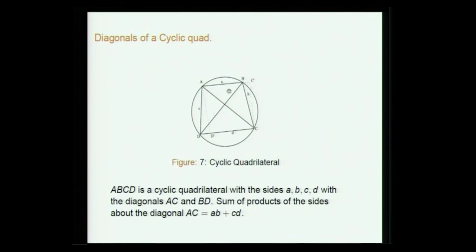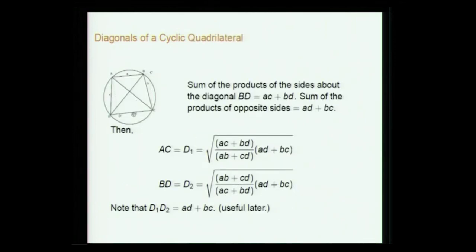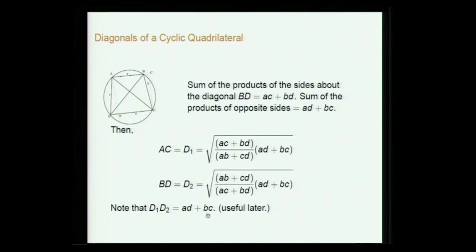The sum of the products of the sides about diagonal AC: that is AB and CD, so AB + CD. Similarly for diagonal BD it is AC + BD. The sum of the products of opposite sides is AD + BC. The result is: diagonal d1 = √((AC + BD)(AD + BC)/(AB + CD)) and d2 = √((AB + CD)(AD + BC)/(AC + BD)). Note that d1·d2 = AD + BC, which is useful in many applications.